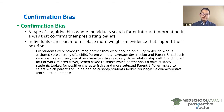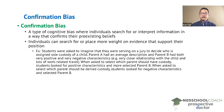As an example, we can consider a study done at a university. Student participants were asked to imagine they were serving on a jury to decide who is assigned sole custody of a child. Students were given descriptions of both parents. Parent A was given an average description — this parent had an average relationship with the child, an average income, and so forth.